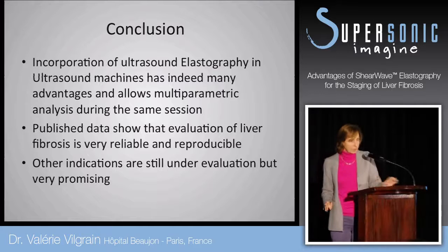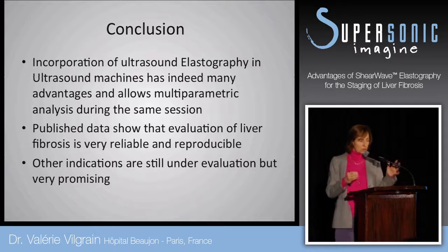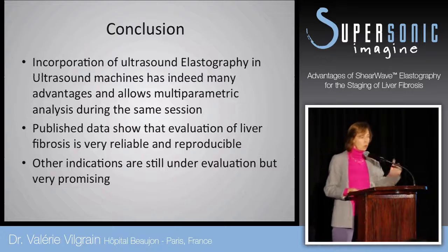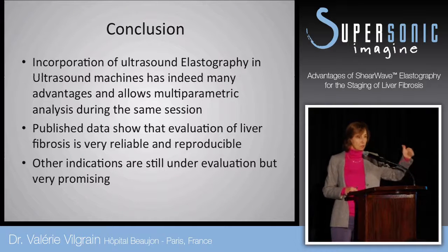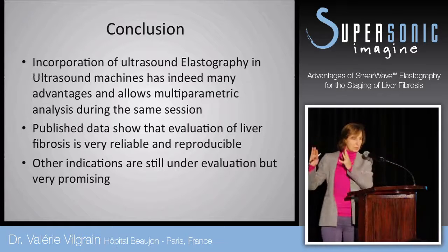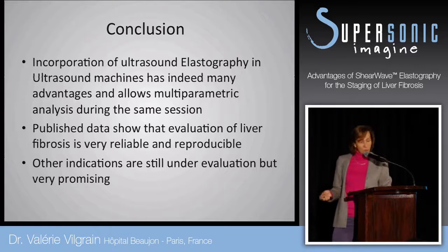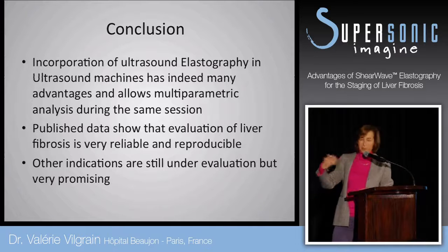In conclusion, incorporation of ultrasound elastography into ultrasound machines has many advantages and allows multi-parametric analysis. As radiologists, we no longer rely on a single parameter — just as in MR we combine morphologic and functional parameters, the same applies to ultrasound. Published data show that evaluation of liver fibrosis is very reliable and reproducible, and there are other indications — those I described and many others — that will be developed quite soon.